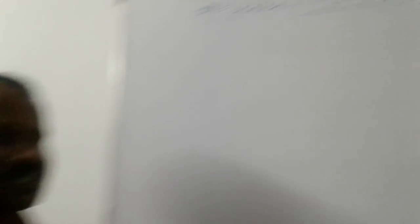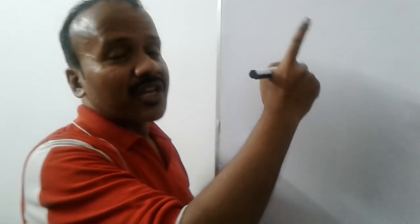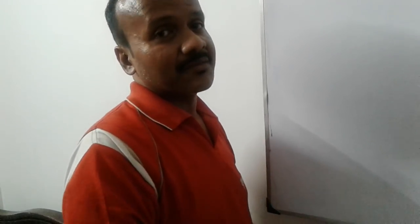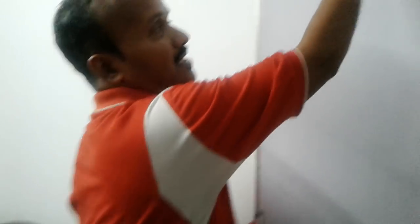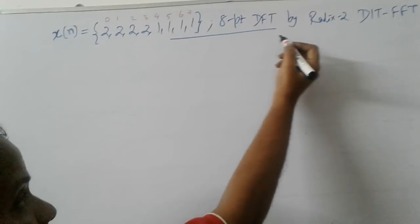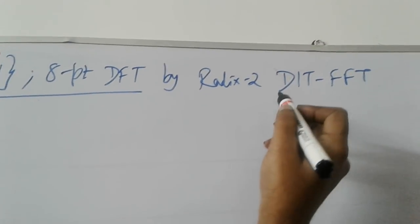Mainly I am uploading this video for JNTU students. They have exam on December 15th. This one actually came for regular exam also for them in May 2017. The problem is X of N equal to 4 twos followed by 4 ones. We have to find 8 point DFT by radix-2 DIT-FFT. DIT is nothing but decimation in time.